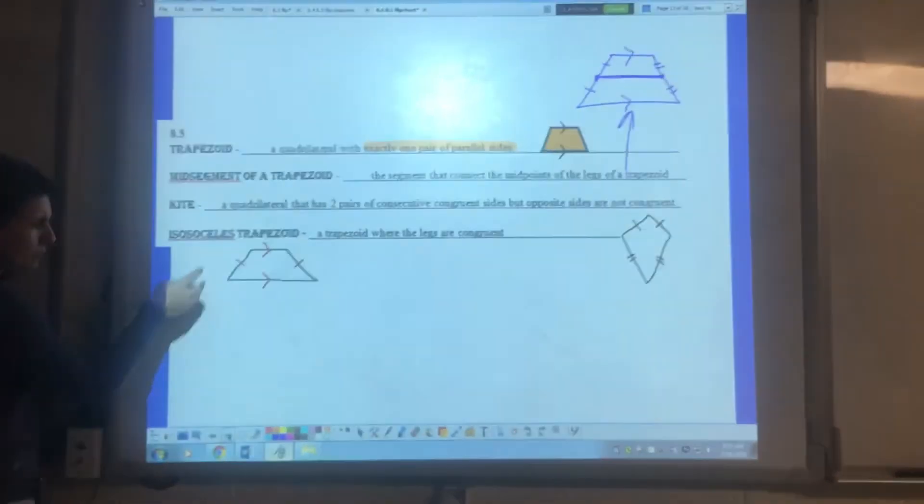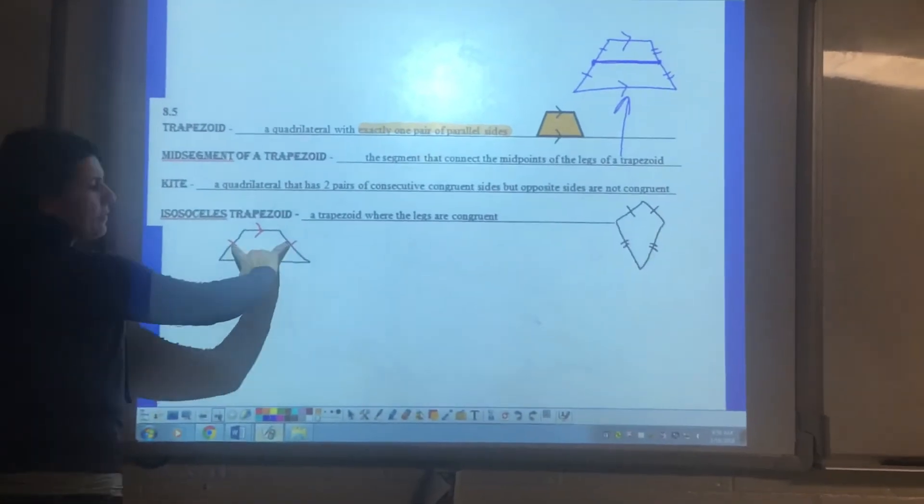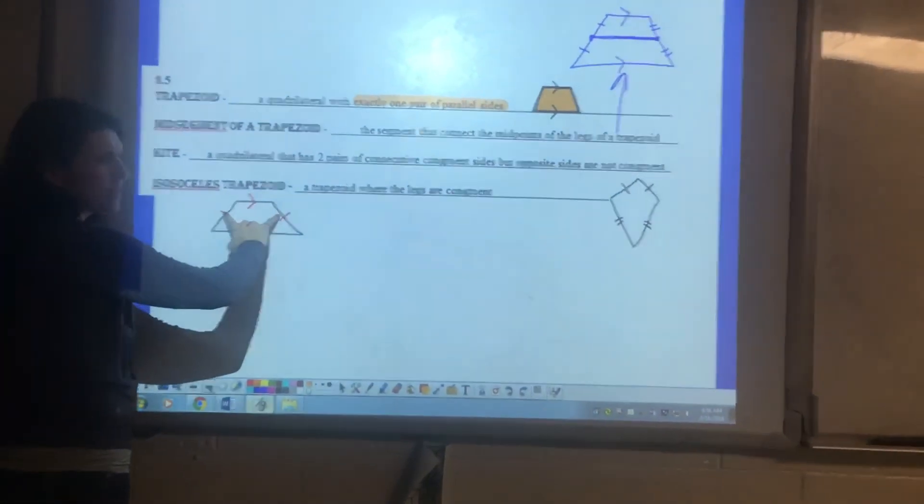Isosceles trapezoid. It has a pair of parallel sides but it makes it isosceles if these two sides are the same length. These are parallel. These are the same length.